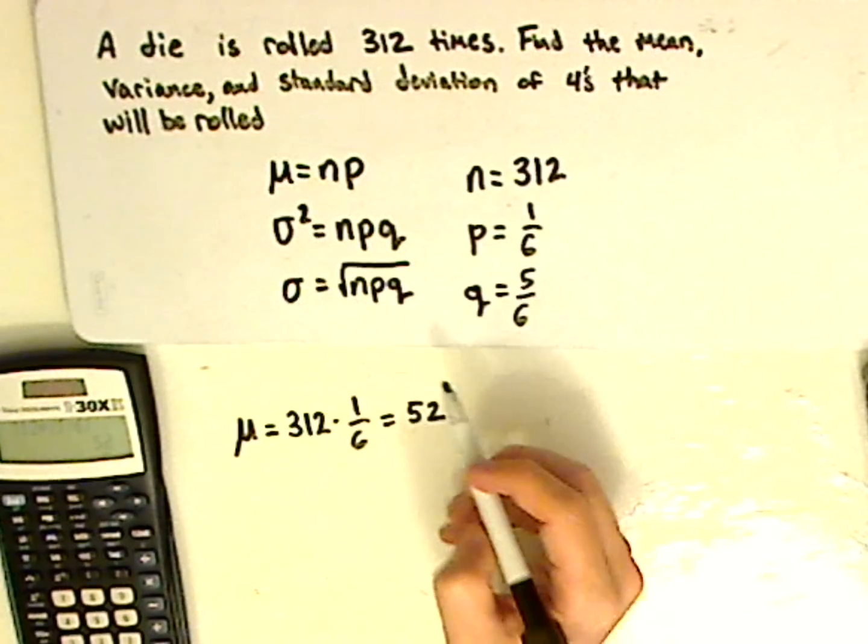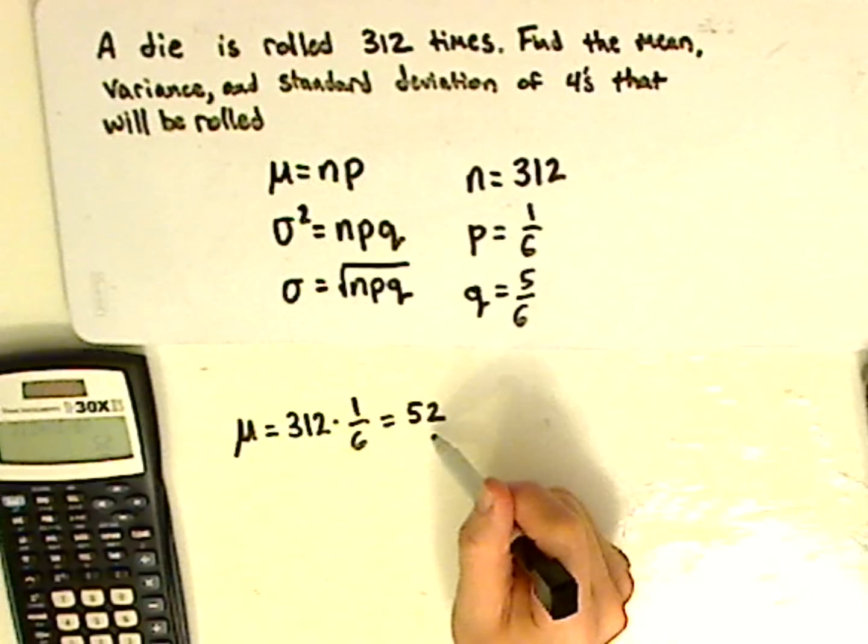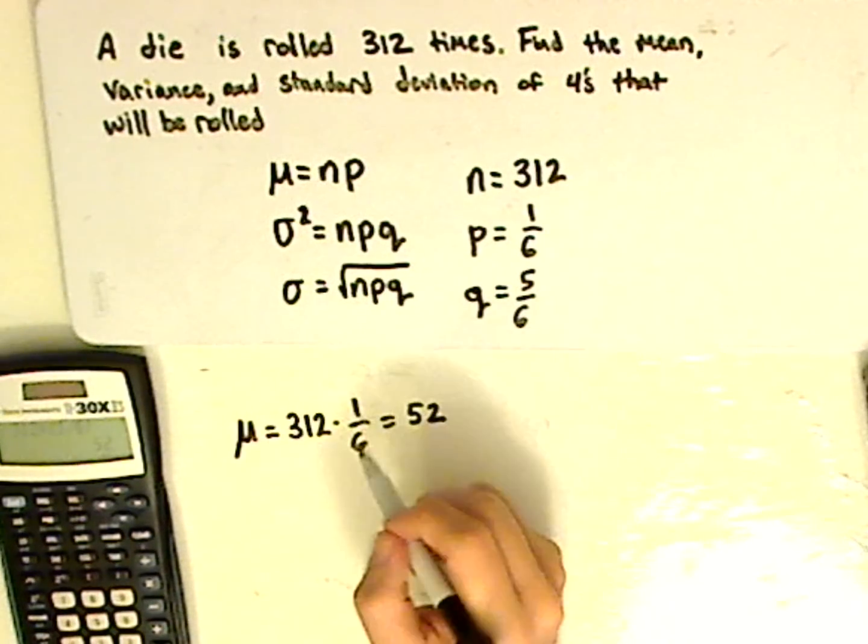So I expect to get 4s 52 times in those 312 trials.